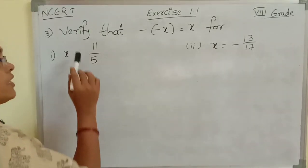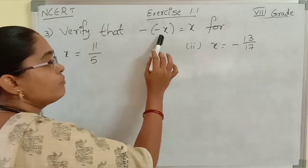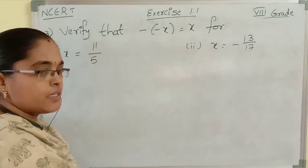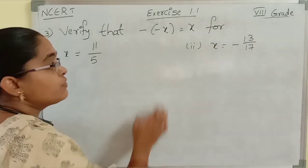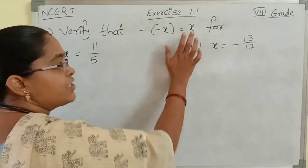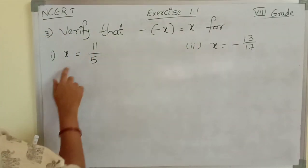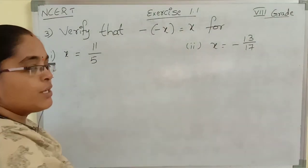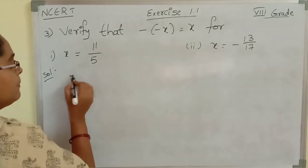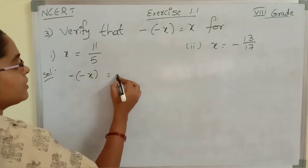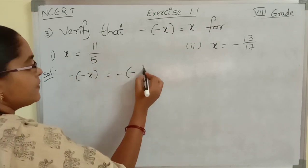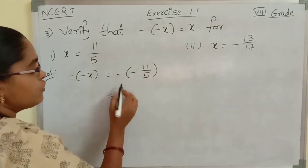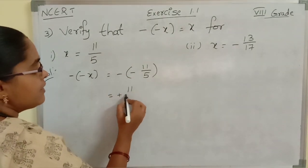Now see the third roman: verify that minus of minus x is equal to x for these numbers. We need to take the LHS, which is minus of minus x, find the answer, and observe whether LHS equals RHS. For the first one, x is equal to 11 by 5. Taking minus of minus x — substituting x equals 11 by 5 — minus of minus 11 by 5.